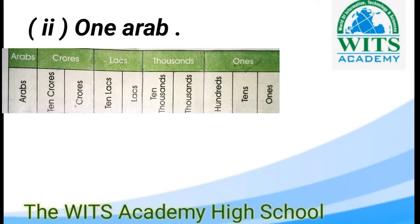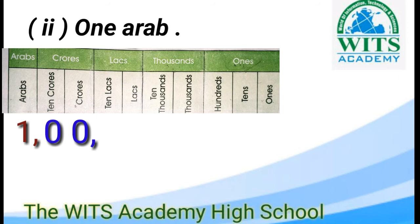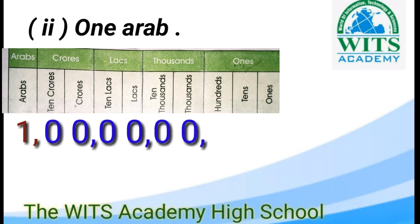Point number 2: one arab کو ہمیں figure میں write کرنا ہے۔ Figure میں write کرنے کے لئے ہم left side سے start کرتے ہیں۔ One arab میں صرف one arab ہے، اس لئے ہم one کو arab کے portion میں لکھیں گے۔ کروڑ کی value نہیں ہے تو اس کی جگہ zero لگاتے ہیں۔ لاکھ کی value نہیں ہے تو zero۔ Thousands نہیں ہے تو zero۔ Ones میں 3 places ہیں — this is why we will not have zero.